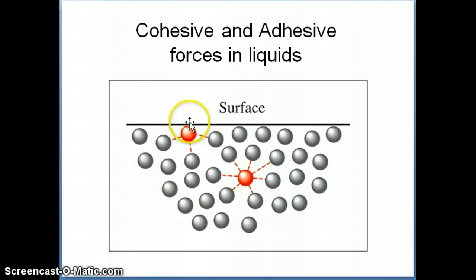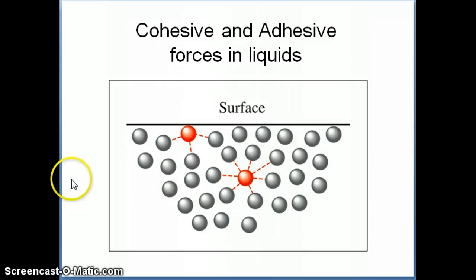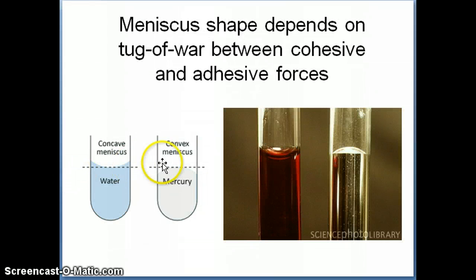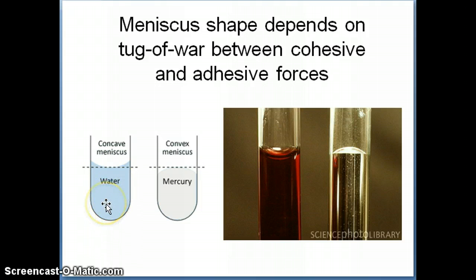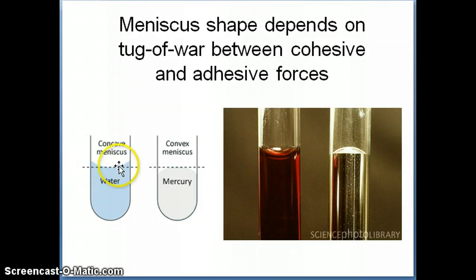Depending on the strength of the adhesive versus cohesive forces, you get certain shapes resulting from the interplay between these two forces. One thing I want to highlight is how liquids form their meniscus shape as a function of this interplay. Something like water, which is a polar liquid, tends to form a concave meniscus. Here's an example of an aqueous solution — you can see the concave meniscus, which is something you've seen when doing experiments in the lab.